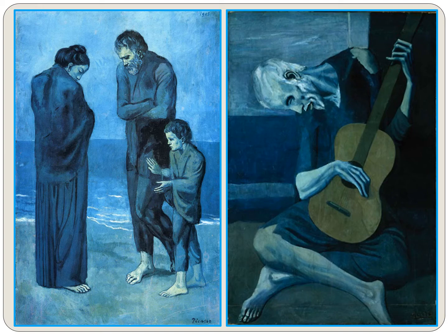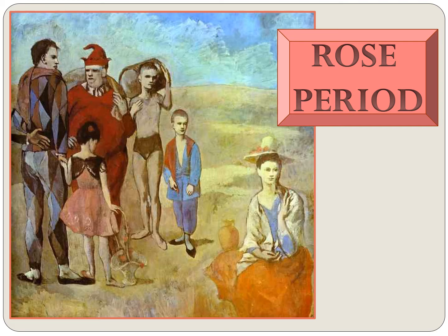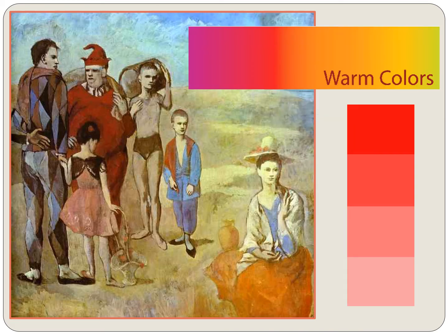Life got better for Picasso. He met some friends, he got married, and he even started to sell some paintings. When he was happy, it showed in his paintings. There is an expression — 'life is rosy' — things are good when life is rosy. Picasso's next paintings are called his Rose Period, and they were a little happier. Rosy red is a warm color.